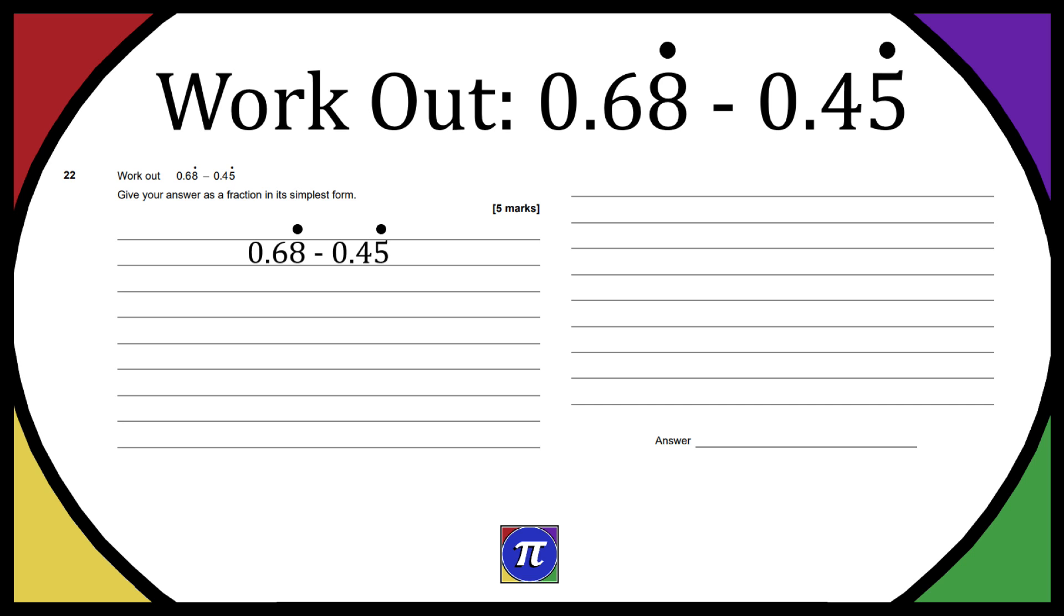Now we need to work out 0.68 recurring minus 0.45 recurring and we need to give it as a fraction in its simplest form. So I think the best thing to do is work out the answer when we subtract these recurring decimals and then we convert it into a fraction afterwards, giving it in its simplest form.